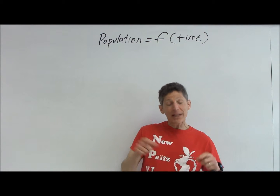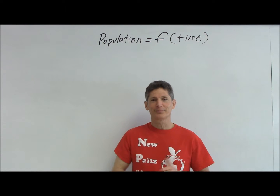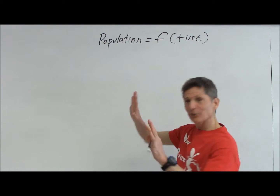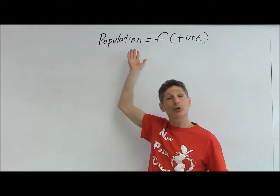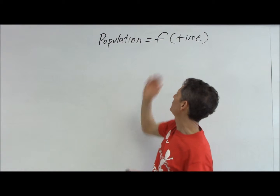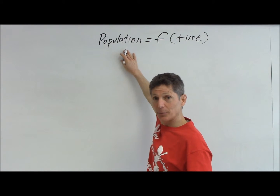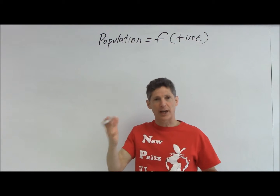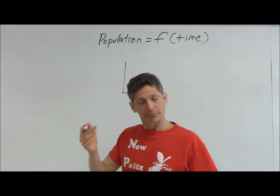We are going to talk about the meaning of the derivative and second derivative. So here's our little scenario: we're looking at the population of a little town. It could be the population of New Paltz during some time period. Population as a function of time. When I write in function notation like this, population is the y value — y equals f of x — and in parentheses, this is always the x value. So I'm just going to go through a few scenarios.